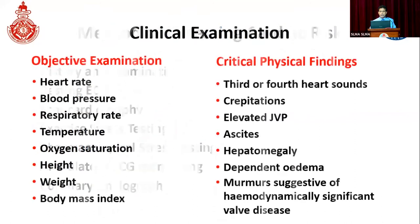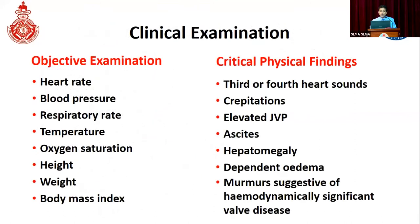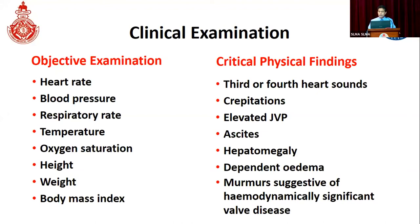As physicians, we always perform objective examination and take measurements like heart rate, blood pressure, respiratory rate, temperature, oxygen saturation, height, weight, and body mass index. To assess cardiac risk and identify active cardiac problems, it is important to look for third or fourth heart sounds, pulmonary crepitations, elevated JVP, ascites, hepatomegaly, dependent edema, and murmurs suggestive of hemodynamically significant valve disease.